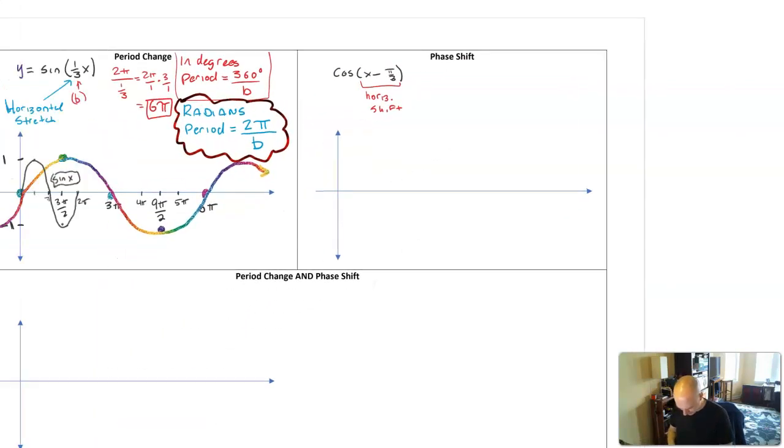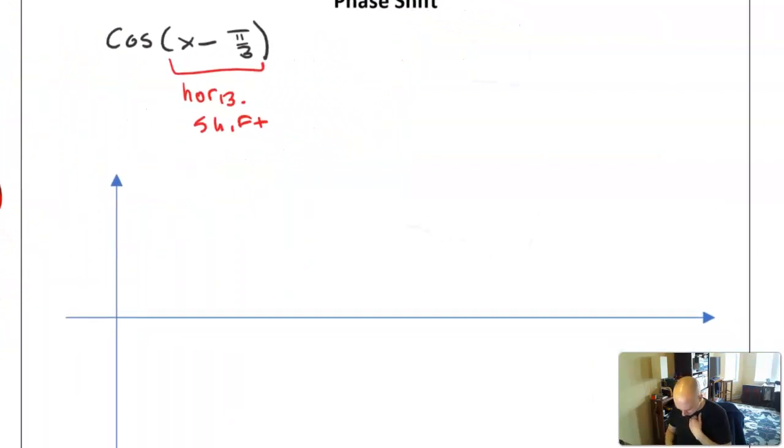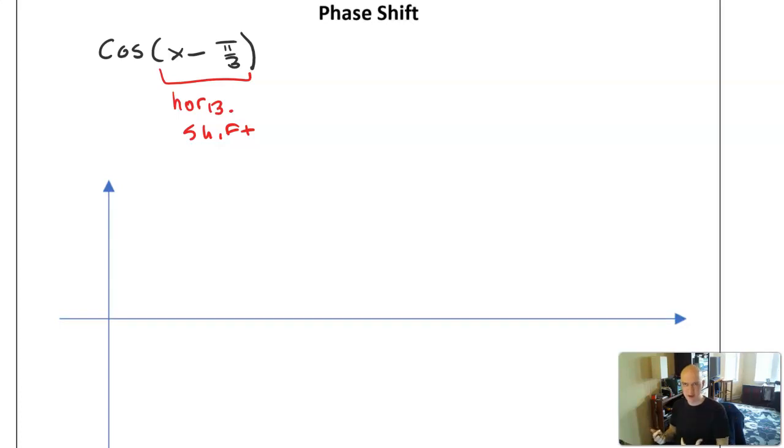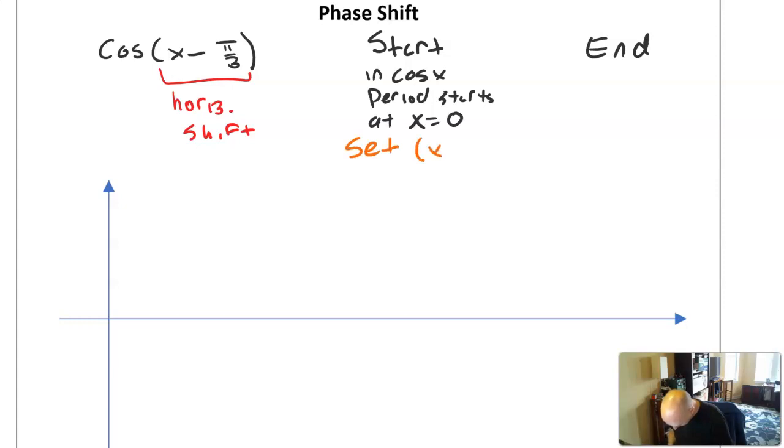Now, eventually we're going to do something with a period change and a phase shift. So I want to show you a method for this phase shift that might seem overly complicated. The idea is locating the start and end of a period. So in cosine x, a period starts at x equals 0. So what I'm going to do is set the argument, x minus pi over 3, equal to 0, because if I can find the x that gives me 0, then that will tell me what's putting 0 into the original expression.